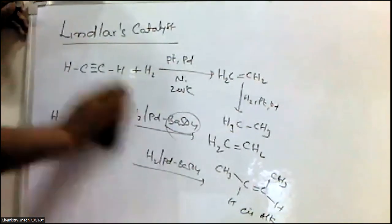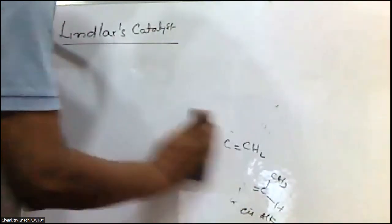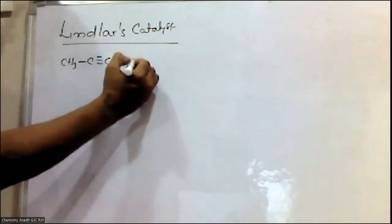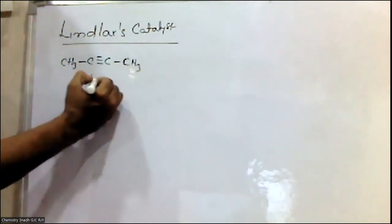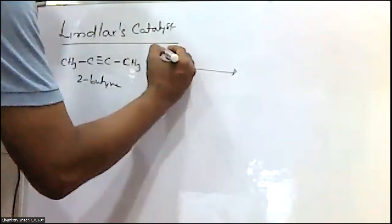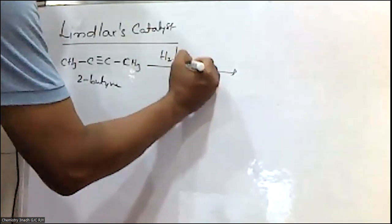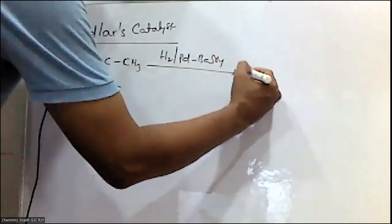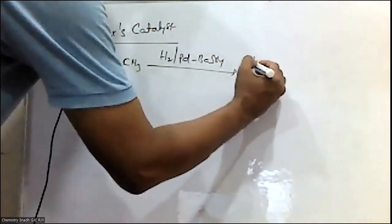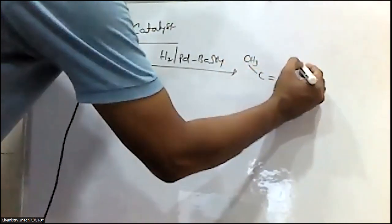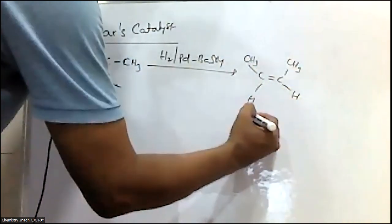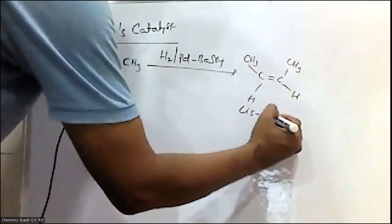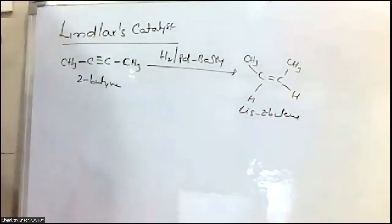This is one of the reactions involving Lindlar's Catalyst. Let me explain one more reaction of non-terminal alkynes. If you take CH3-C≡C-CH3 — again 2-butyne — on reaction with Lindlar's Catalyst, H2 by palladium by barium sulfate, cis-2-butene is formed.